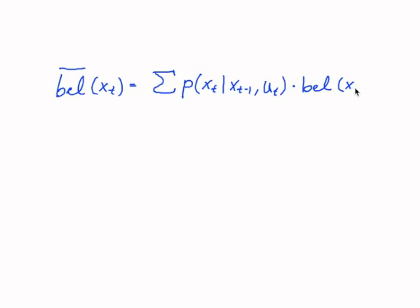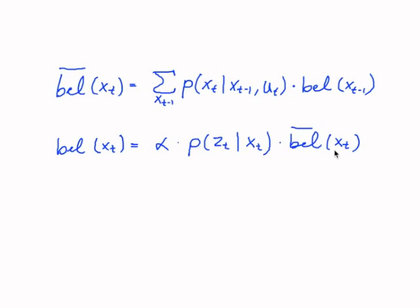Now let's write that down again with indices. So in our movement step, we compute our belief overline of x_t, using the total probability, namely the probability that we end up in x_t, given that we were previously in x_{t-1}, and also given the control u_t, times the probability that we were in the state x_{t-1}, which we now denote as the belief of being in x_{t-1}. And this is summed up over all x_{t-1}. And in the next step, we compute our belief after incorporating the measurement, which is a normalization factor times the probability of the measurement z_t, given that we are at position x_t, times this belief that we just computed.